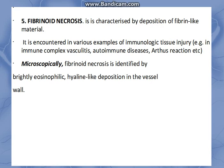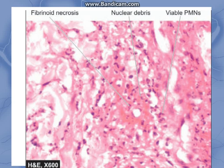The last type is fibrinoid necrosis. It is characterized by deposition of fibrin-like material. It is encountered in various examples of immunological tissue injury and is mostly seen in autoimmune diseases, where fibrin-like material is present.